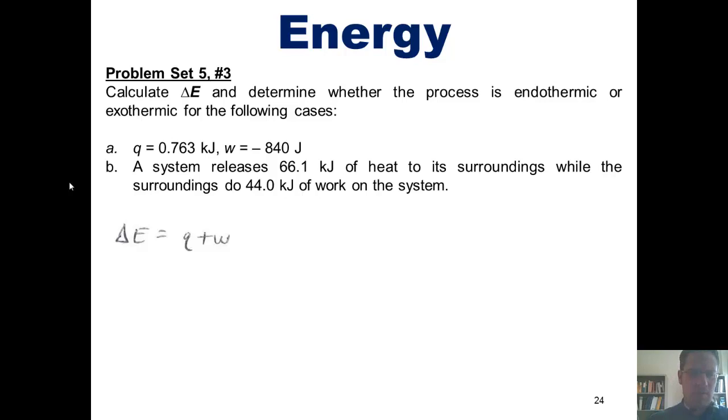It tells us in this question that a system releases 66.1 kilojoules of heat to its surroundings. We imagine, once again, our system having 66.1 kilojoules inside its bank account and releasing those 66.1 kilojoules to its surroundings. Does that represent losing energy or gaining energy? It, of course, represents losing energy. Thus, that heat value is negative. And a negative value of heat is exothermic.